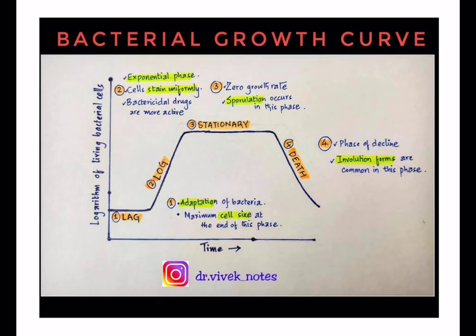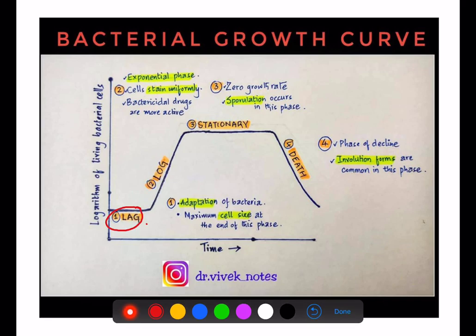Moving to the bacterial growth curve — many exam questions are asked about this. There are four phases: lag phase, logarithmic phase, stationary phase, and death phase. In the lag phase, bacteria adapt to the environment and maximum cell size is attained by the end of this phase.